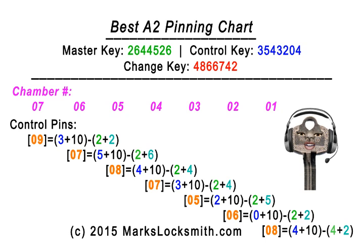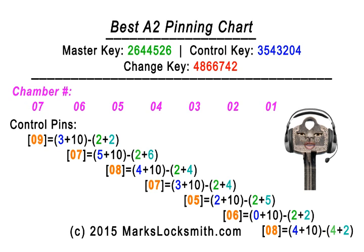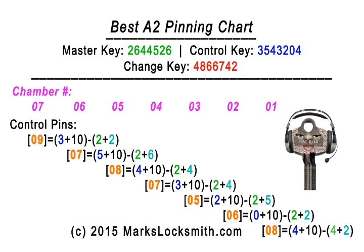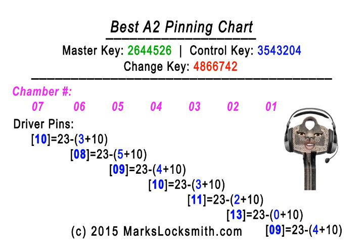Chamber four: we got seven by taking three from position four on our control key, adding ten, and subtracting our master pin and bottom pin. Chamber three: the two came from the control key plus ten, minus our master pin and bottom pin from the previous chart. The same goes for chambers two and one.